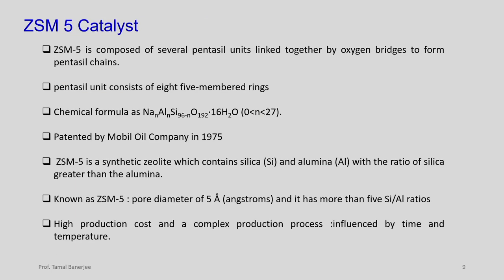Let us see the ZSM-5 catalyst first. It is composed of several pentasil units linked together by oxygen bridges to form pentasil chains. The pentasil unit consists of 8 five-membered rings. The chemical formula is sodium aluminosilicate — Na₉₆Al₉₆Si₁₉₂O₁₆·16H₂O. It is patented by Mobil Oil Company in 1975. It is a synthetic zeolite containing silica and alumina with the ratio of silica greater than alumina. ZSM-5 has a pore diameter of 5 Ångström and has more than 5 different silica to aluminium ratios in the crystalline structure.